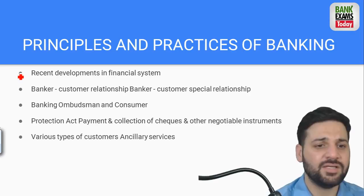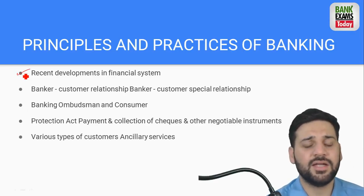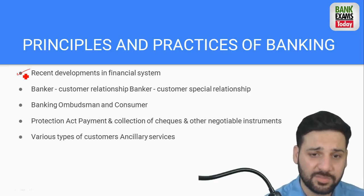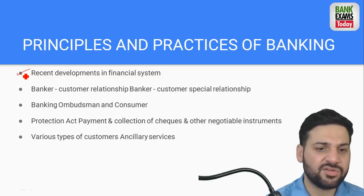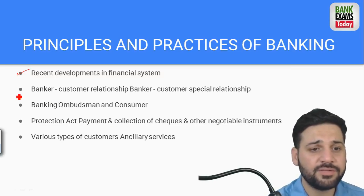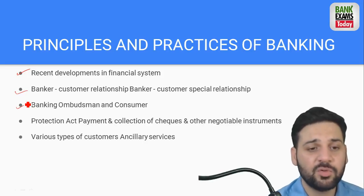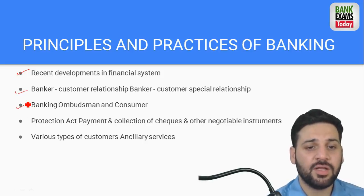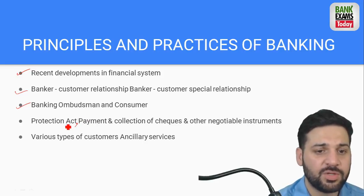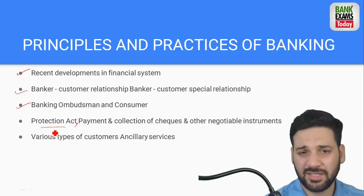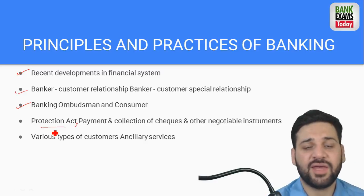Recent developments in the financial system are part of the first chapter — this can be called current affairs related to the banking industry. Banker-customer relationship, banker-customer special relationship, banking ombudsman and consumer protection act — we have made notes on all of these. Consumer Protection Act is a separate chapter; don't go too in-depth, just read it briefly.